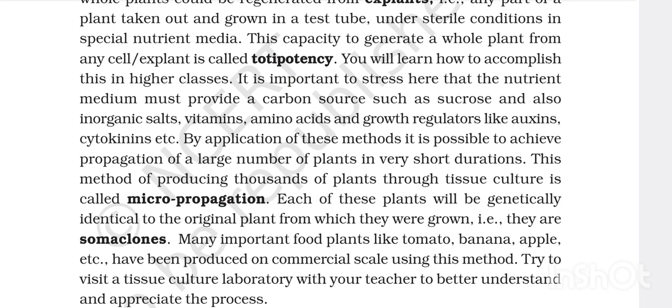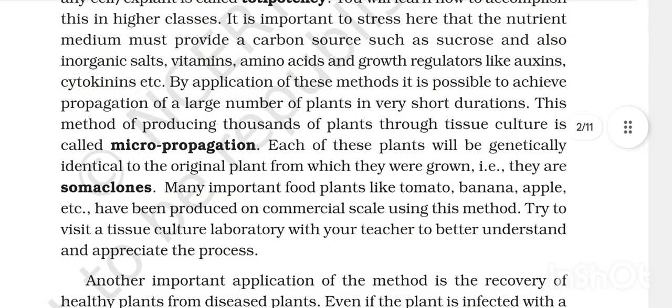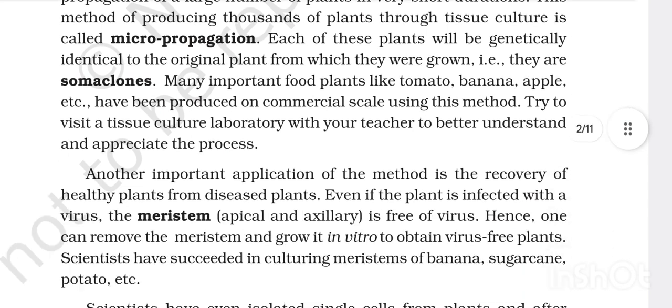The method of producing thousands of plants through tissue culture is called micropropagation. Each of these plants will be genetically identical to the original plant from which they were grown — they are called somaclones. Many important food plants like tomato, banana, and apple have been produced on a commercial scale using this method.